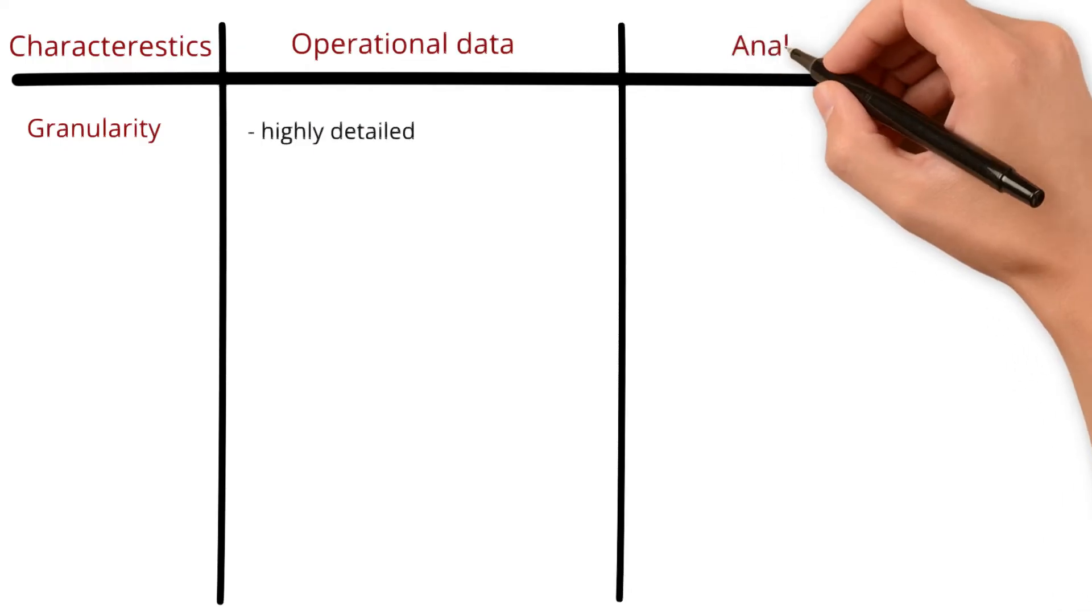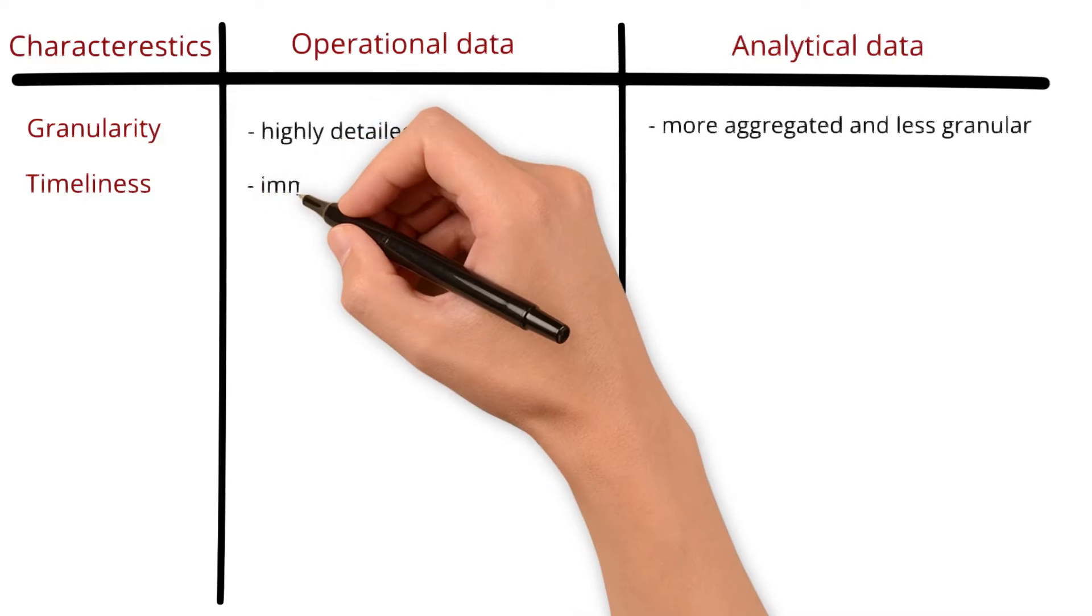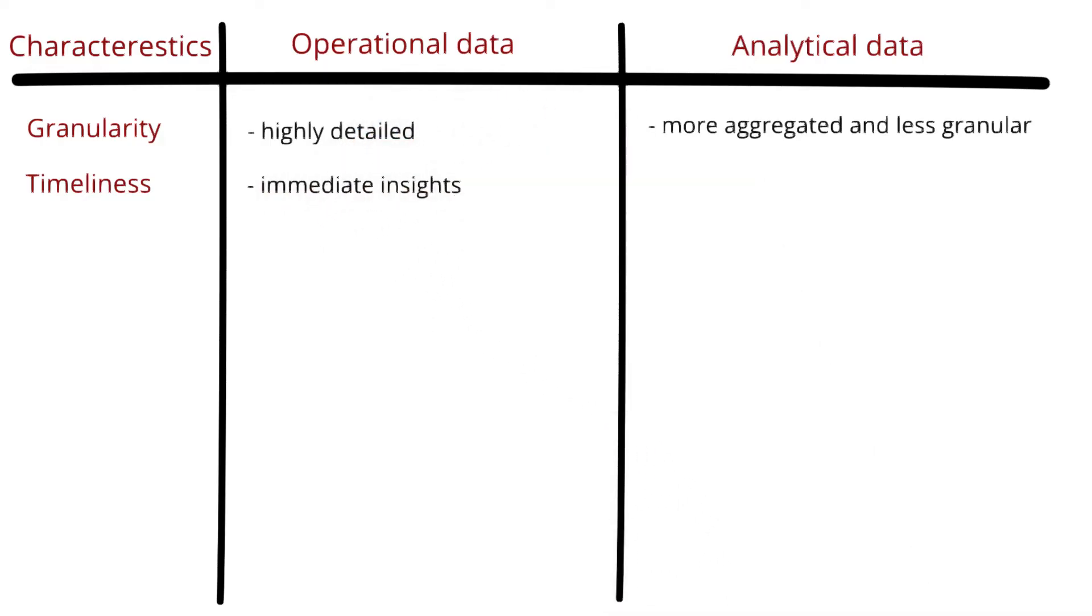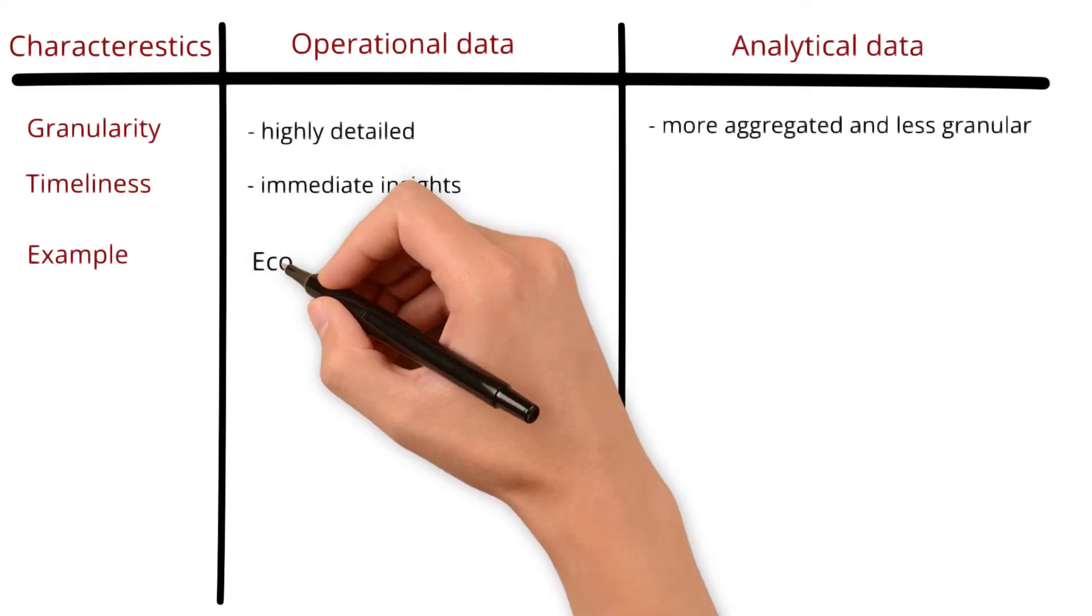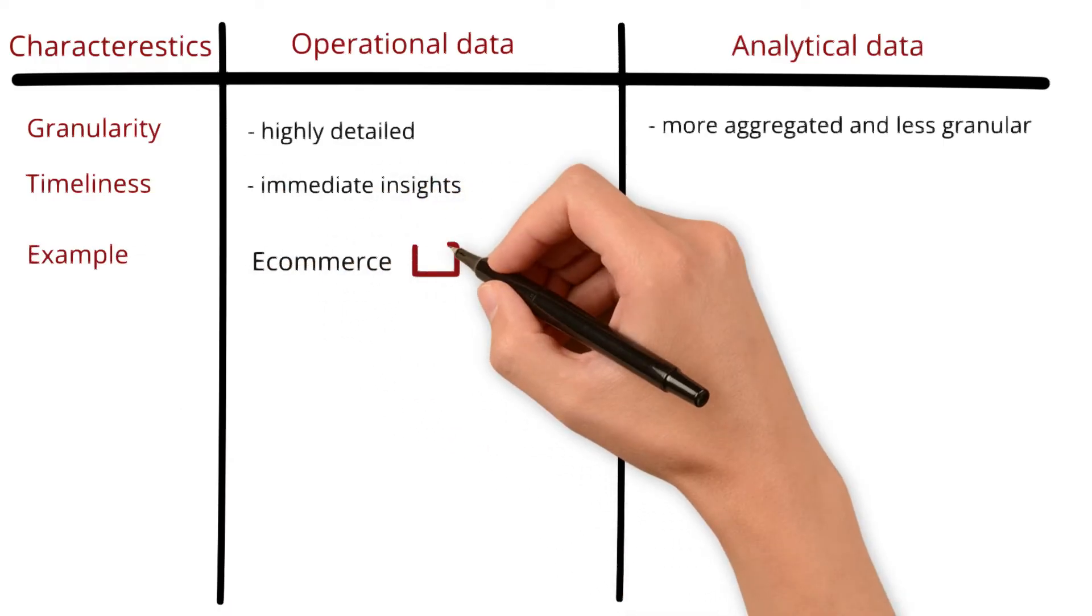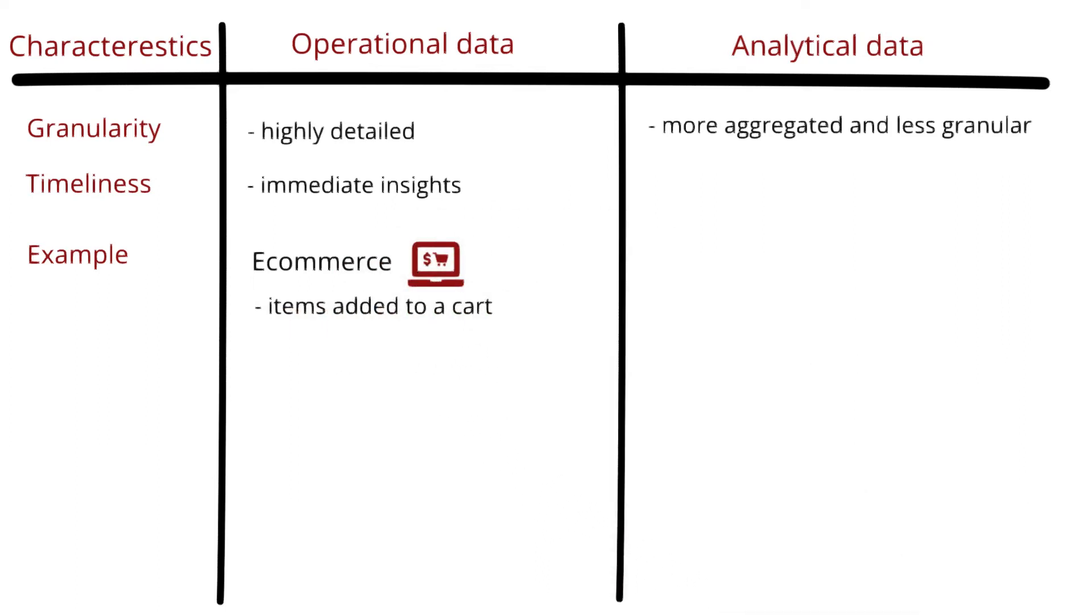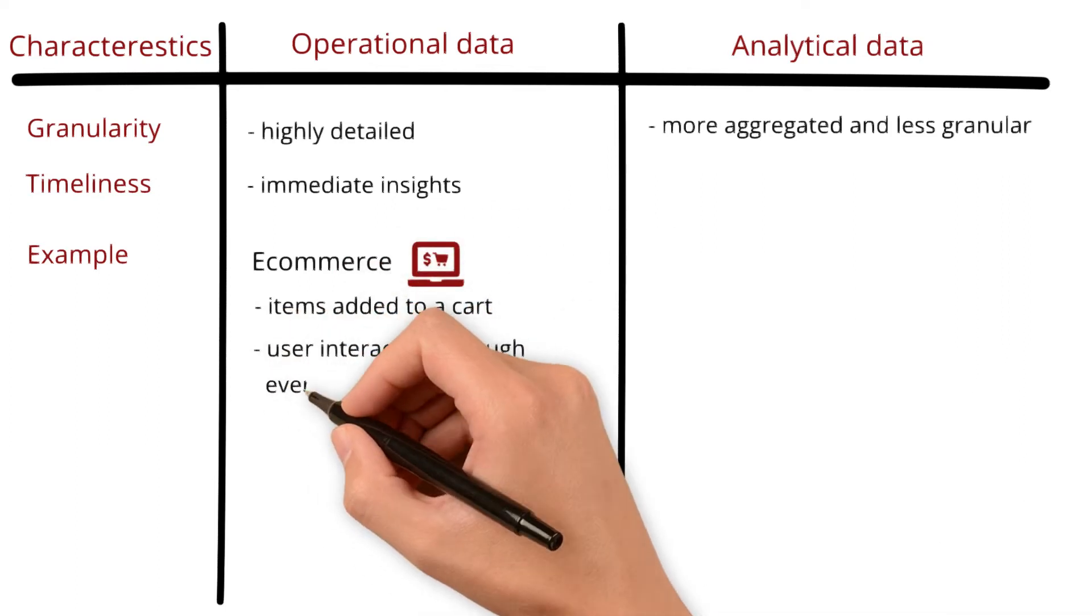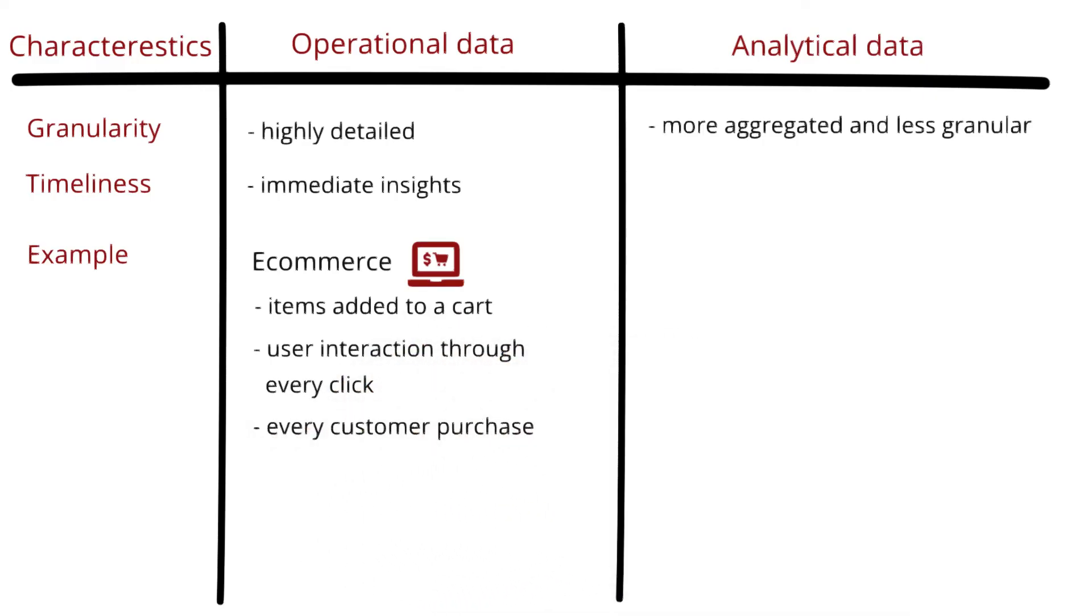In contrast, analytical data is more aggregated and less granular. Regarding timeliness, operational data gives immediate insights by recording events as they happen. For example, in an e-commerce platform, it tracks every transaction in real-time, like items added to a cart, user interaction through every click, and every customer purchase.